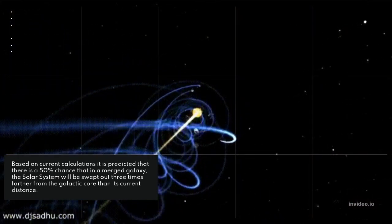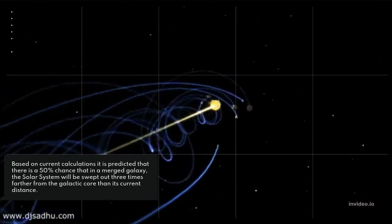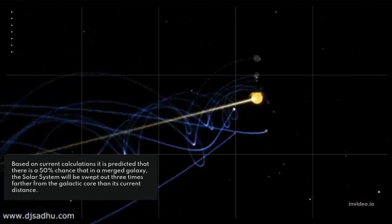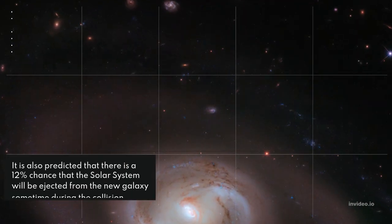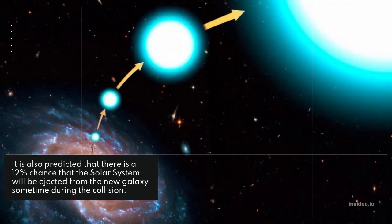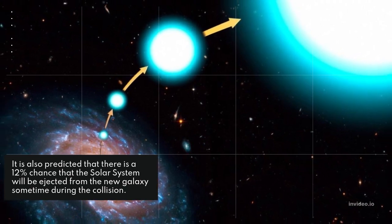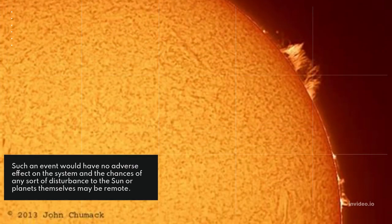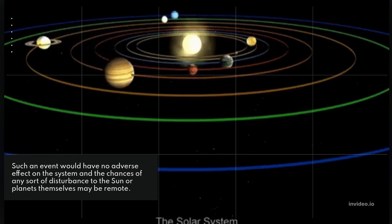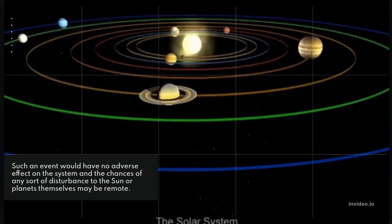Based on current calculations, there is a 50% chance that in the merged galaxy, the solar system will be swept out three times farther from the galactic core than its current distance. There is also a 12% chance that the solar system will be ejected from the new galaxy sometime during the collision. Such an event would have no adverse effect on the system, and the chances of any disturbance to the Sun or planets themselves may be remote.